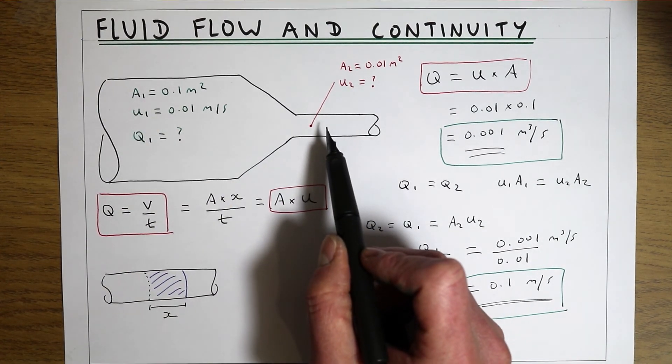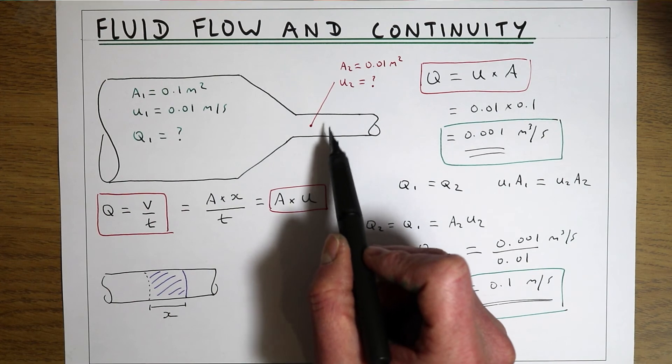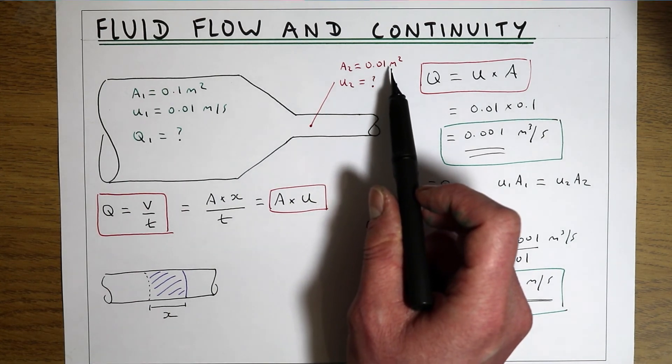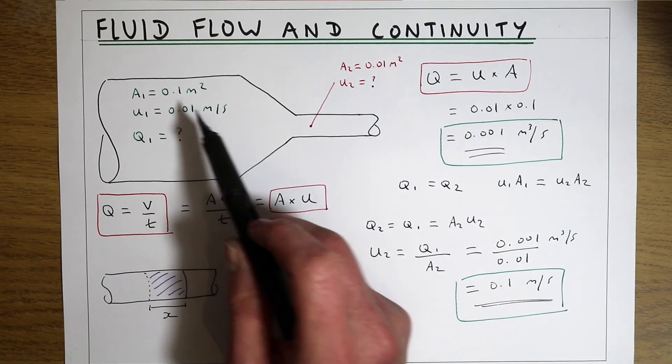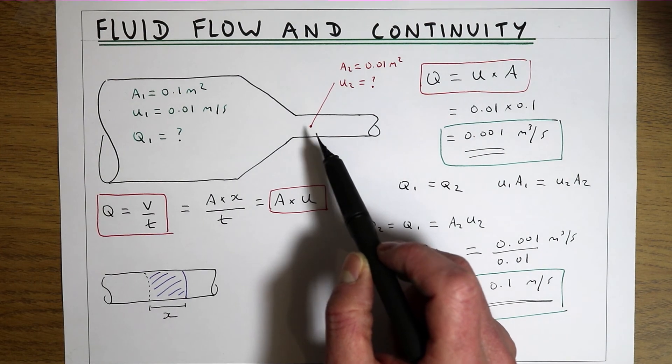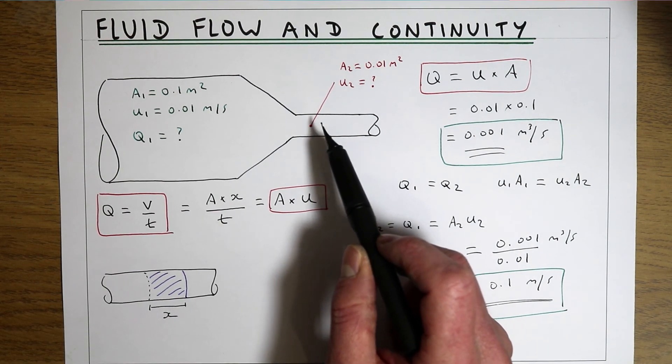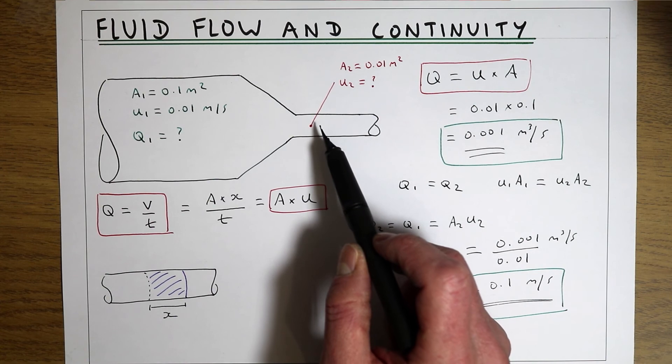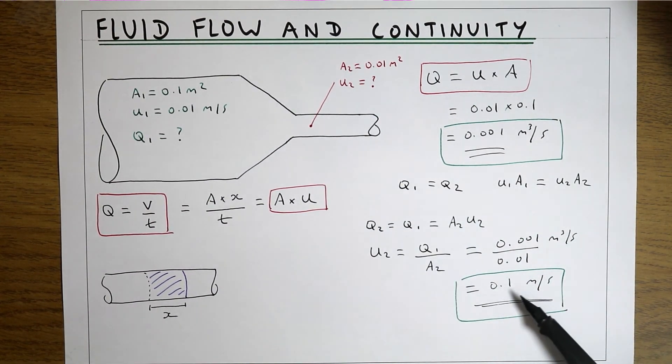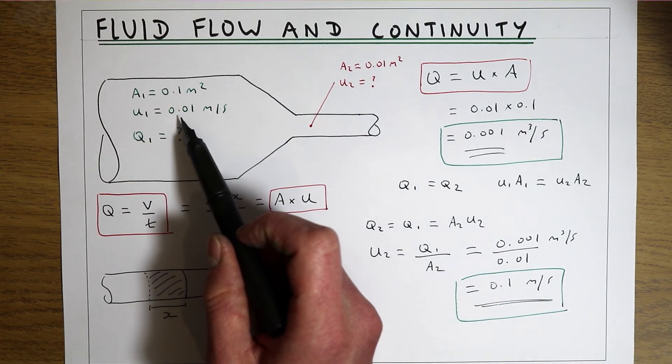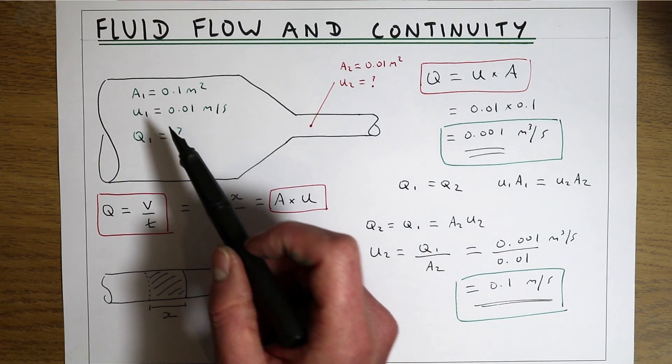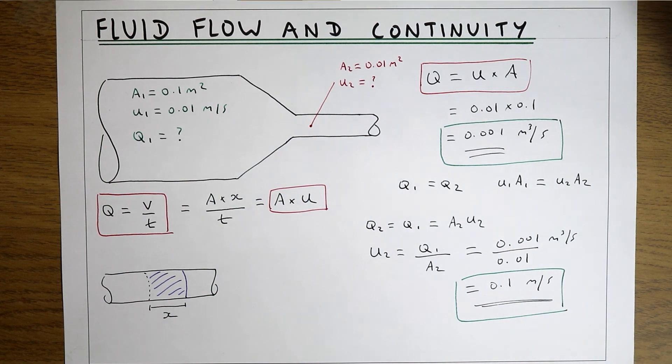At point number 2 we're making the area much smaller, so the area is now 0.01 m² rather than 0.1 m². So the area has been reduced, we know the flow must be the same, so the only way to keep the volumetric flow rate the same when the area has been reduced is for the velocity to increase. At point 2 the velocity increases from 0.01 m/s to 0.1 m/s.